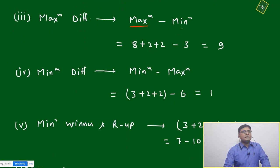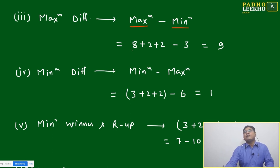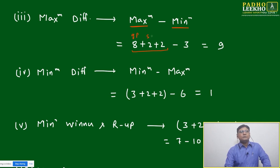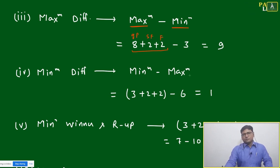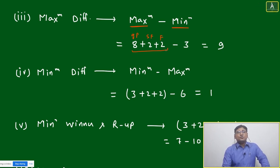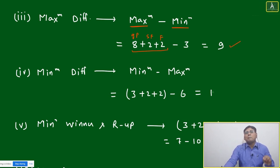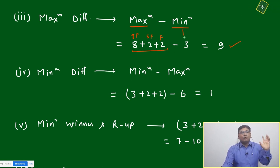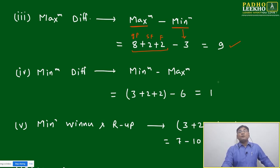Maximum difference means maximum for the winner and minimum for the qualifier. Maximum for the winner: 8 points from group stage, plus 2 for winning the semi-final, plus 2 for winning the final = 12 points. The minimum to qualify for the semi-final is 3 points. So 12 minus 3 equals 9. The maximum difference between the winner and a semi-final qualifier is 9.